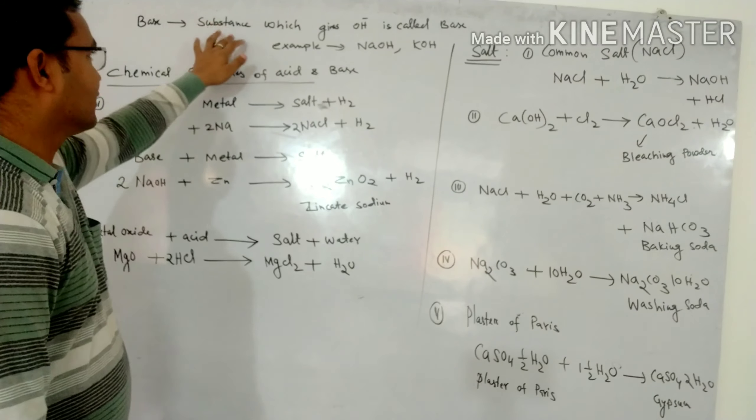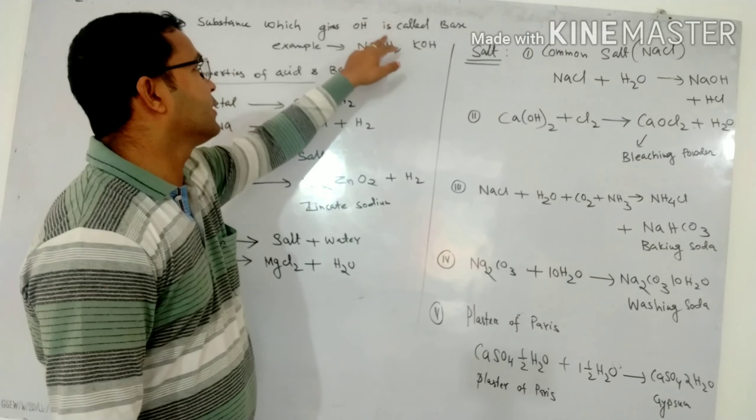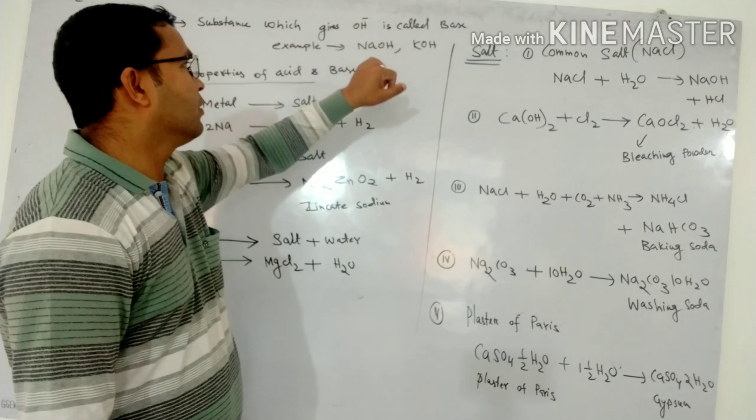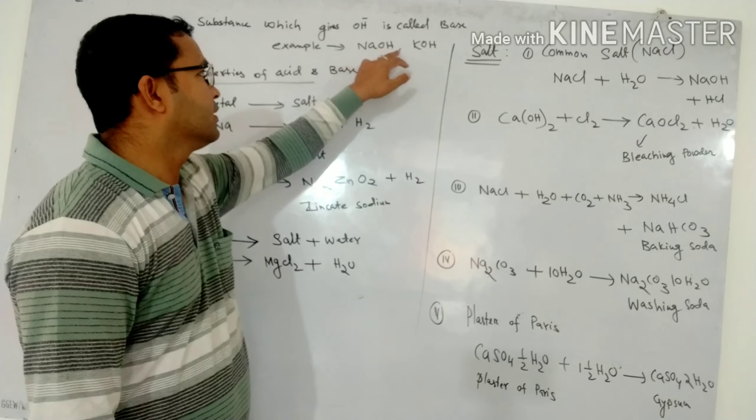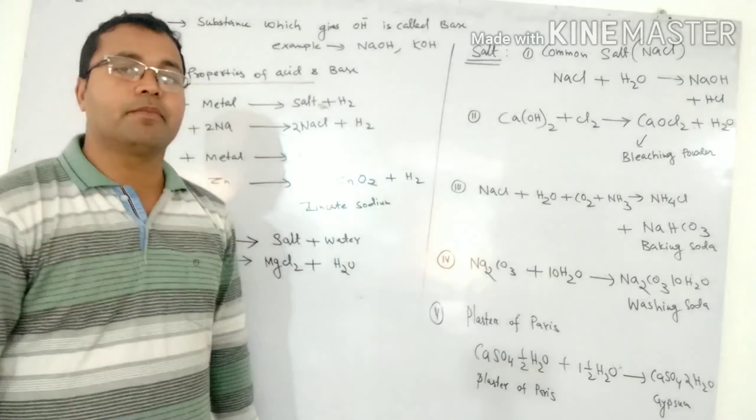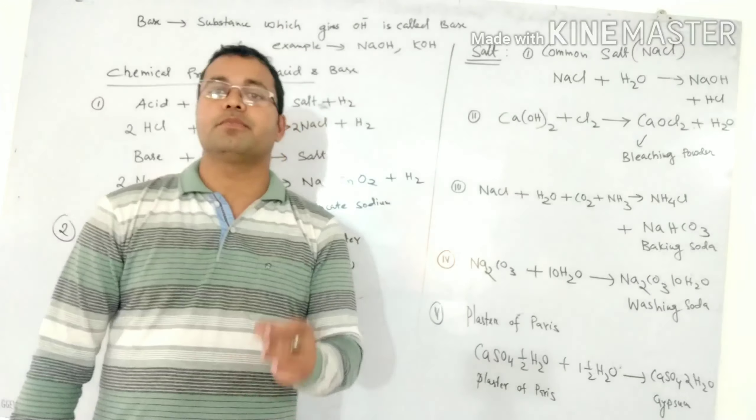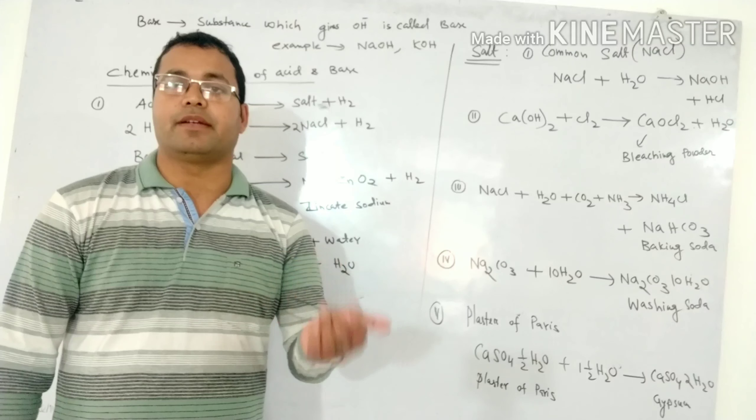Base are the substance which gives OH minus ion. For example, sodium hydroxide, potassium hydroxide. Remember, acids are produced by non-metals and bases are produced by metals.